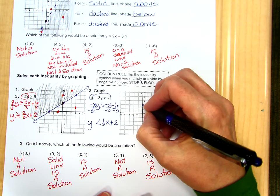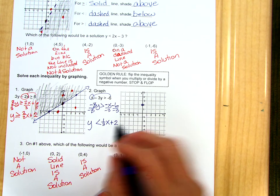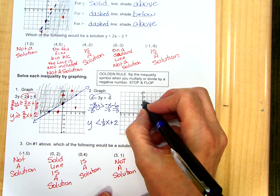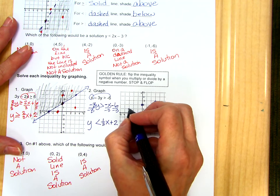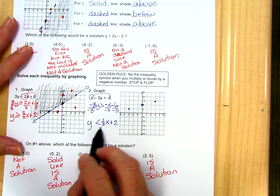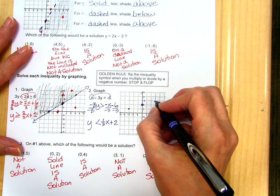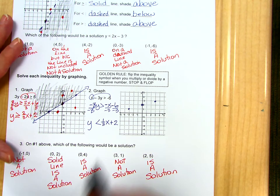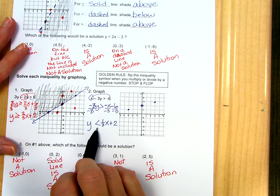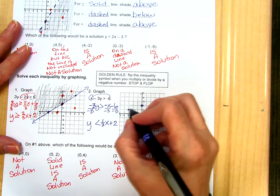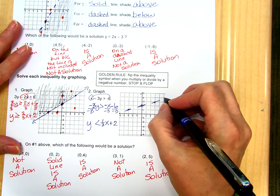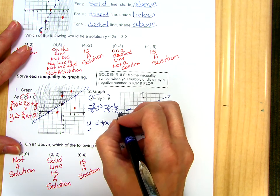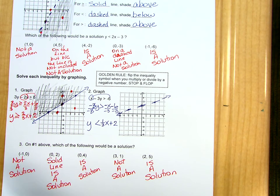So we go to the y-intercept of a positive 2. We find more points by going up 1 and over 3, because that's our slope, or down 1 and back 3. This is not an equality, so we are not going to have a solid line, we're going to have a dashed line. So what I do is I go to the points that I have graphed, and I just dash those, and then try to go a little bit beyond that to get the rest of my line.